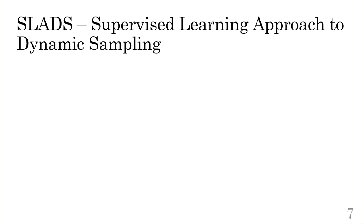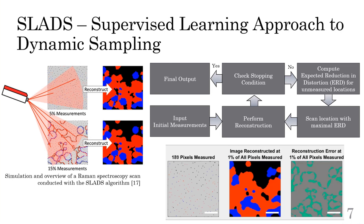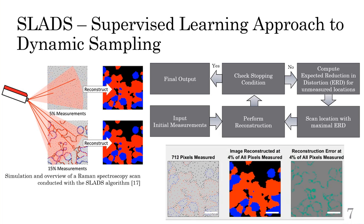This brings us to the SLADS algorithm, or a supervised learning approach to dynamic sampling, which performs dynamic sparse sampling by determining measurement locations through a trained supervised learning model. Given a set of random measurements, a model is used to estimate the potential reduction in distortion, an ERD, for remaining unmeasured locations, based principally on a reconstruction image. The location with maximal ERD is selected for scanning, after which the new information is used to update the reconstruction. If sufficient measurements have been made, then the procedure will terminate; otherwise, it will repeat. The overall operation is shown on the left, animated in a video for a past implementation with Raman spectroscopy, where SLADS reduces the number of measurements by a factor of six.